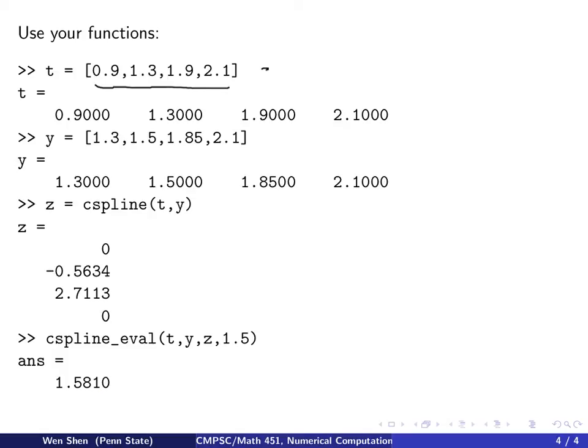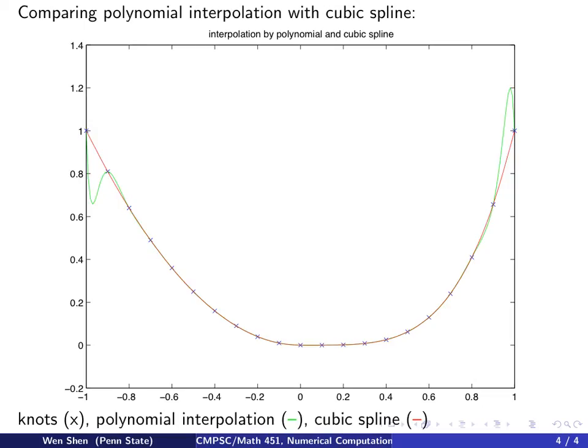So this is how to get the value for one point. And let's take a look at the output of an actual cubic spline versus a polynomial interpolation for the same data set. So here in this graph, the data sets is marked with all these x's. These are my data sets.